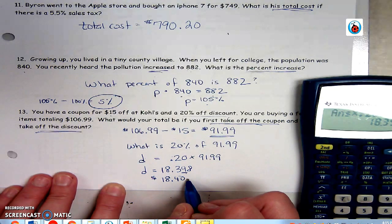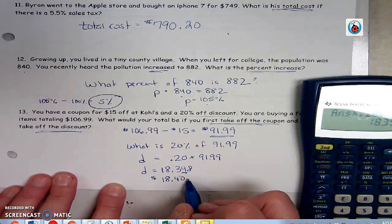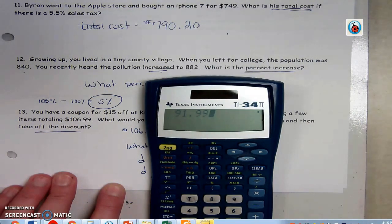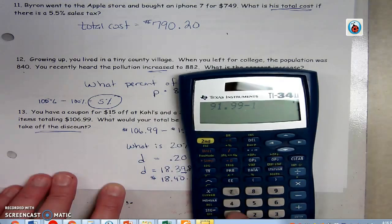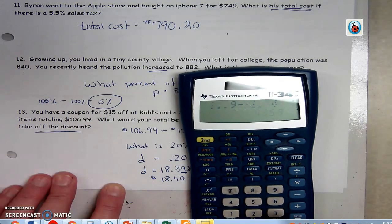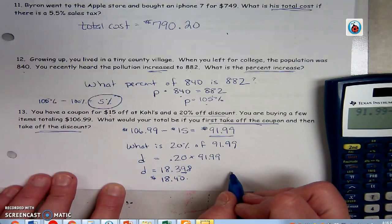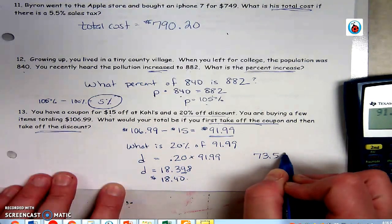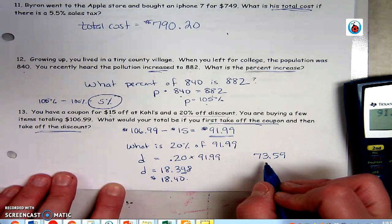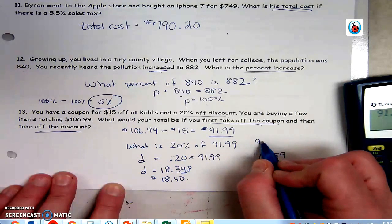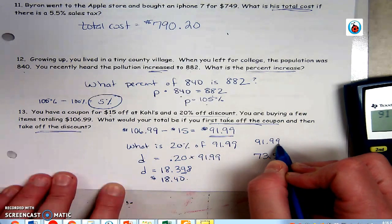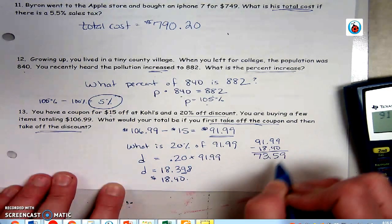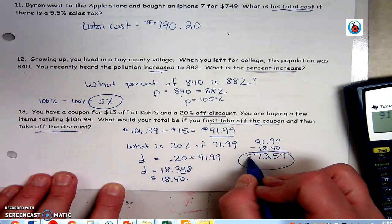So now the discount, I need to take it off of the original price. That means I go $91.99 minus the discount of $18.40, and I get $73.59. So to get that, again, I took the price after the coupon minus the discount, and there's my answer, $73.59.